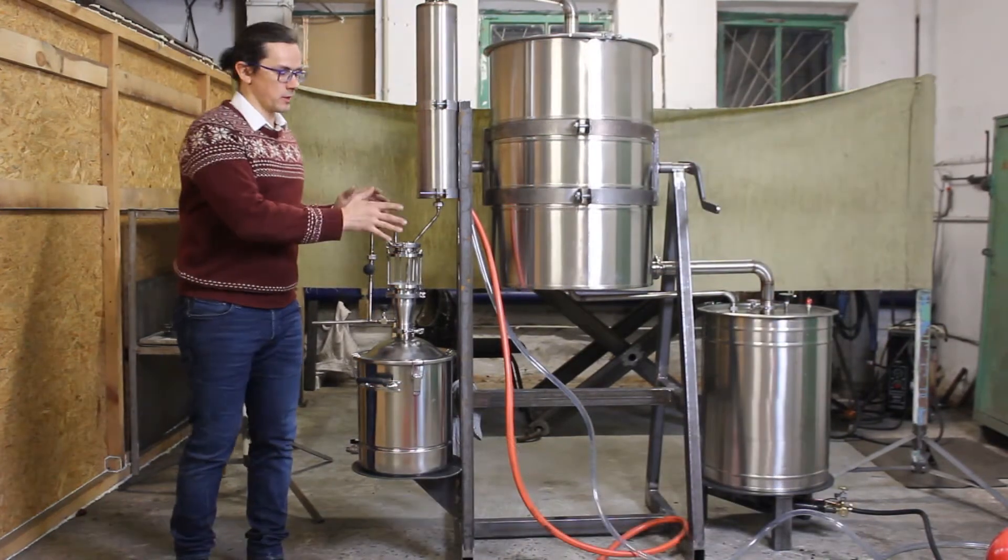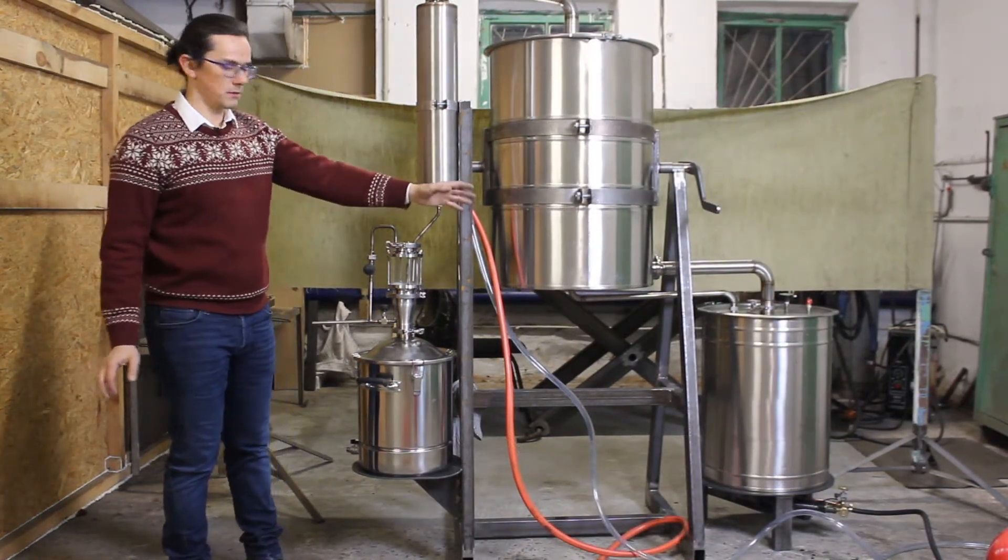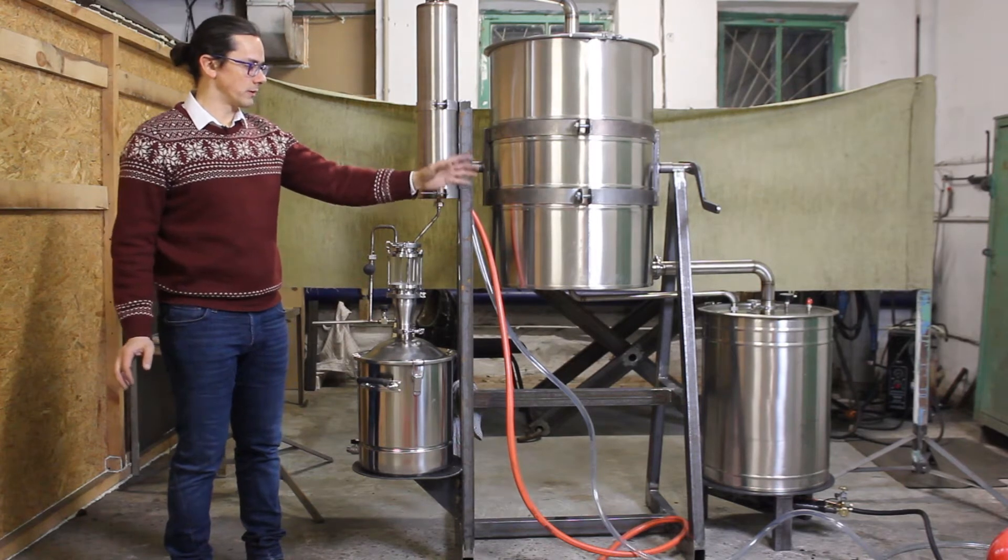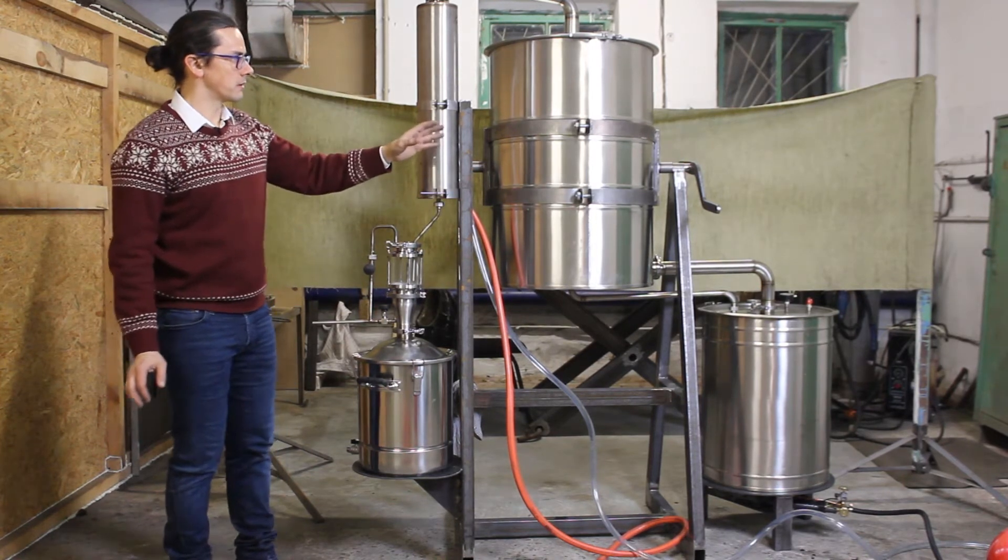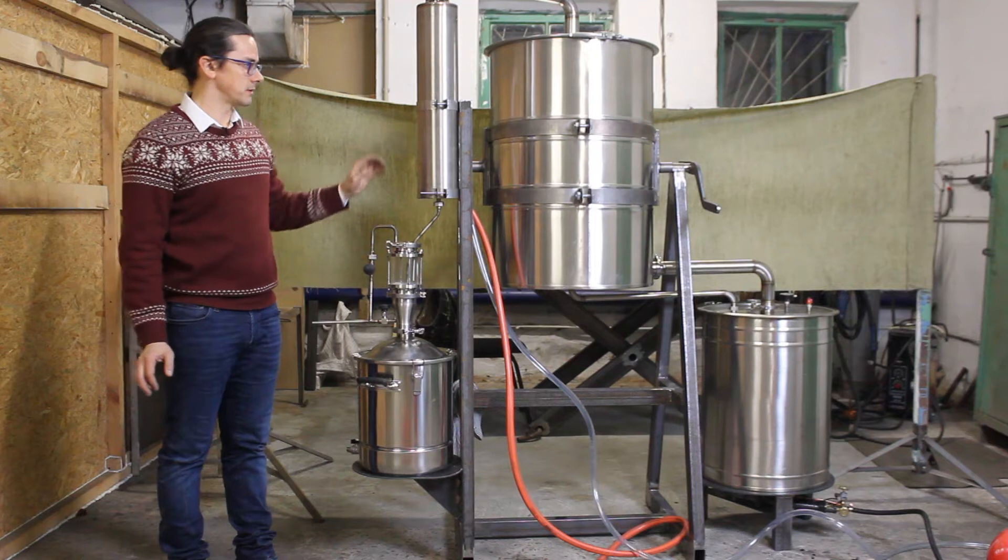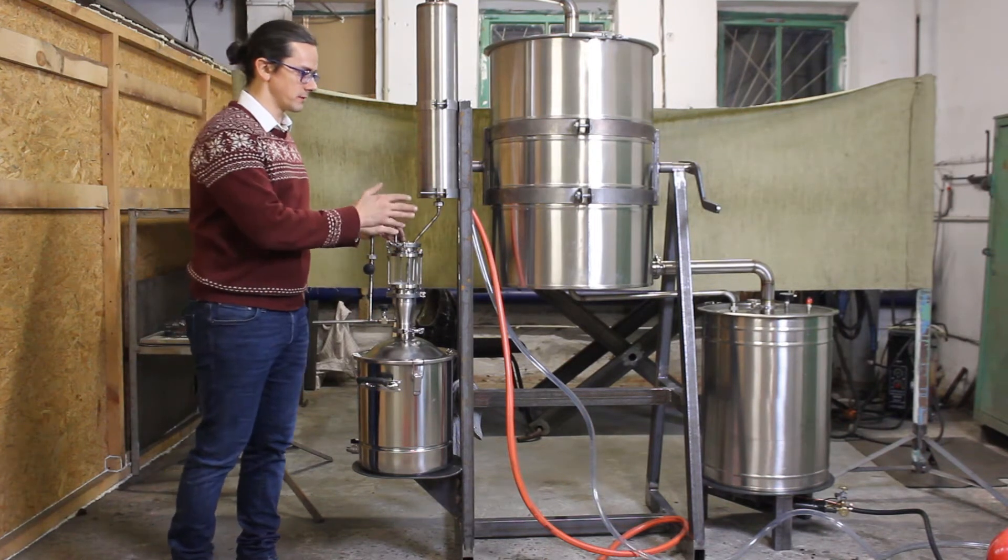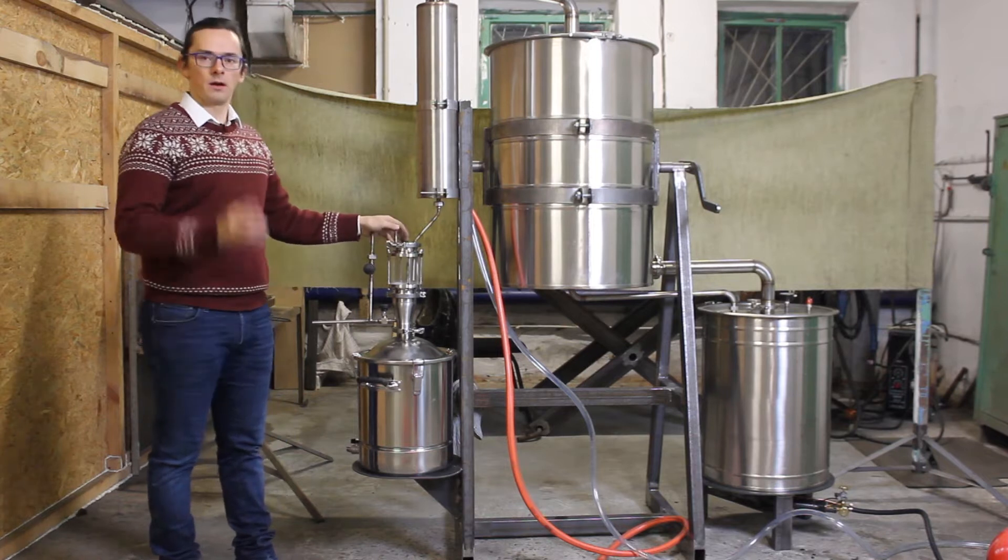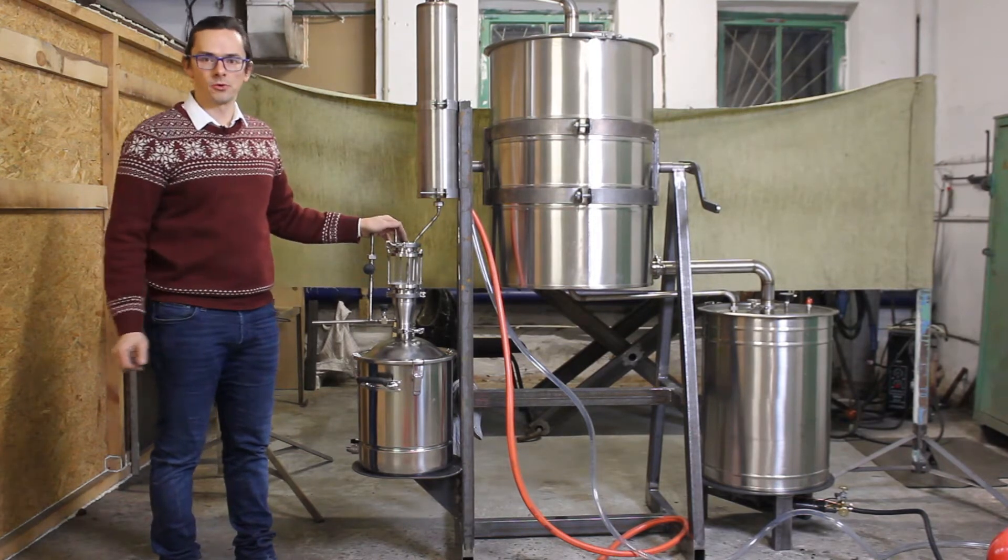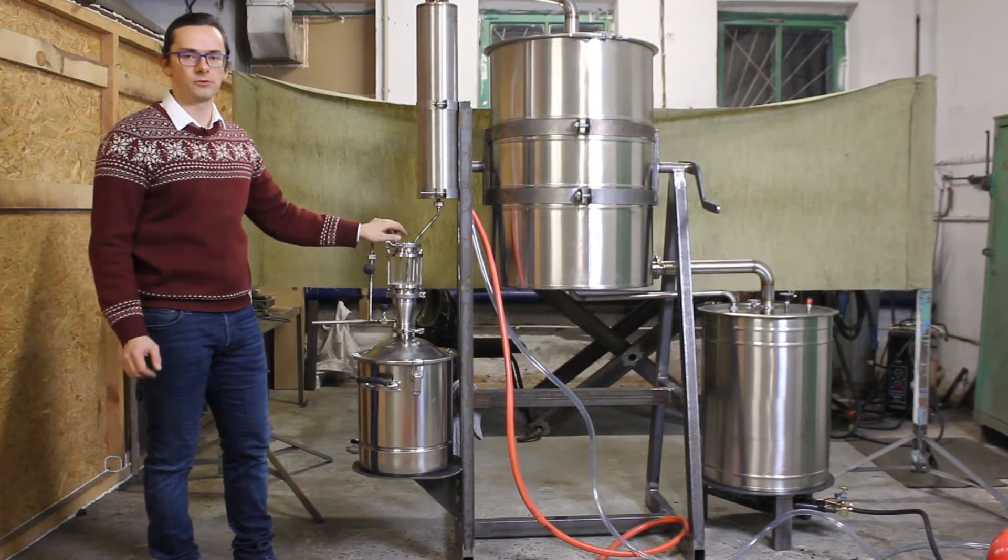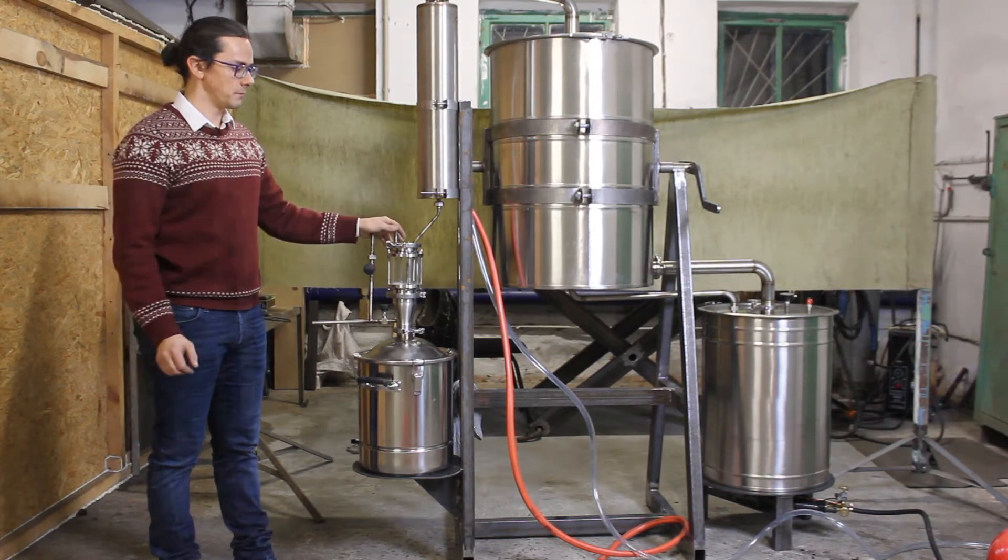After we installed all the equipment, fill up the vapor generator with water, fill up the raw material capacity, and connected the equipment to the water system for cooling, we can start the extraction process. And for this we need to light up the burner.